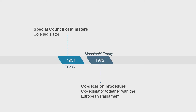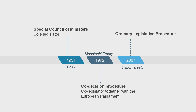In 1992, however, the co-decision procedure was introduced, making the European Parliament a co-legislator together with the Council of the European Union. This procedure evolved into the ordinary legislative procedure when the Lisbon Treaty entered into force in 2009. Today, the Council shares its legislative power with the European Parliament in most EU policy areas. Yet in areas such as foreign and security policy or monetary policy, the Council still plays a dominant role.